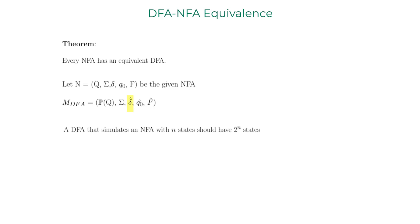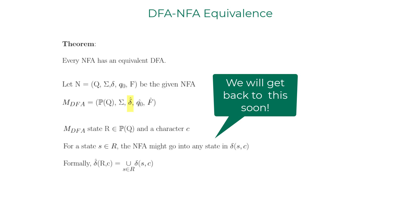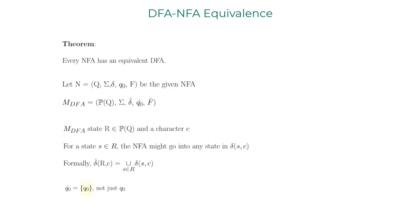And the transition function is pretty interesting. As the DFA should have a transition for every state and for every symbol, the transition table size will blow up exponentially with the size of number of states in NFA. Yet it is finite and can be populated. The transition function can be formulated this way. The start state of DFA would be the set containing the start state of NFA. The set of accepting states of DFA would be all the subsets that contain the accepting states of the NFA.